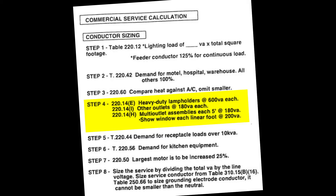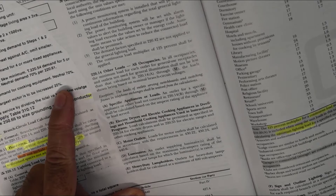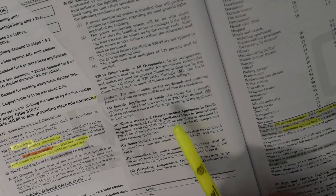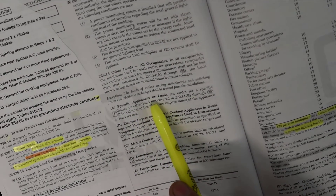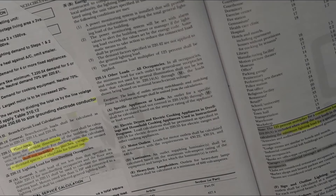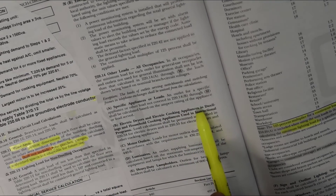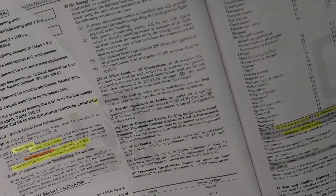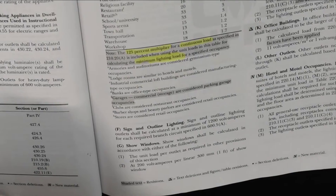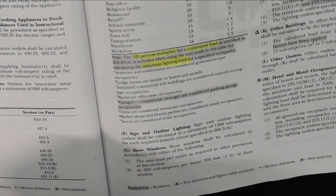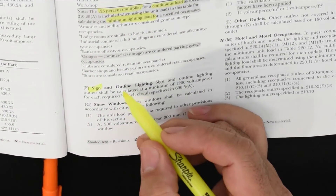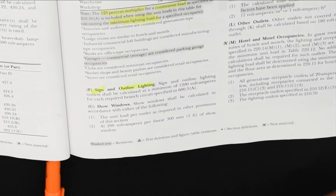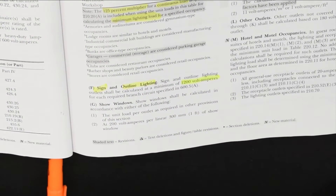Step 4 takes us to 220.14, which covers other loads for all occupancies, sections A through M. Section A covers specific appliances. B is dryers and electric cooking. C is motors. D is luminaires. E is heavy-duty lamp holders. F is signs and outline lighting — the wording on that one tends to confuse people. Signs and outline lighting are calculated at a minimum of 1,200 volt-amps.